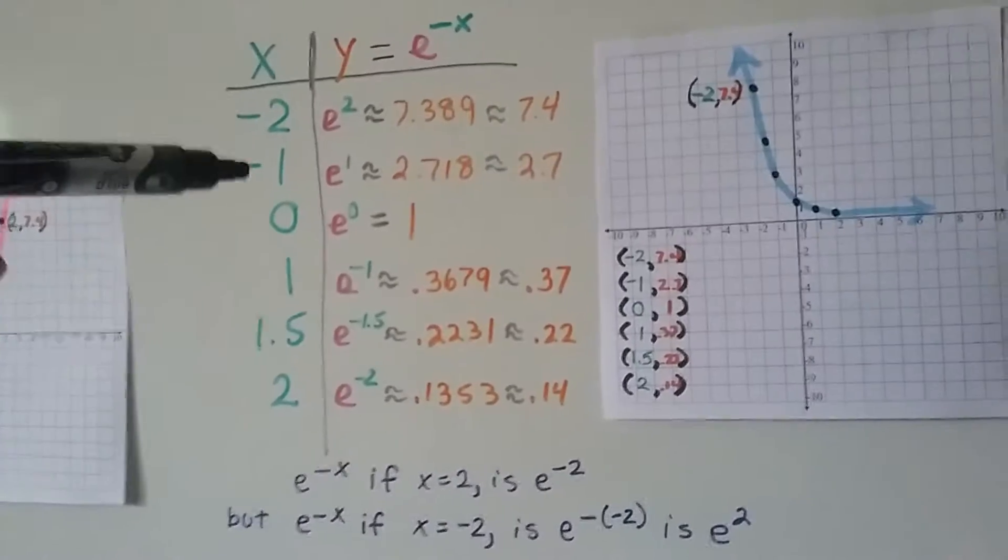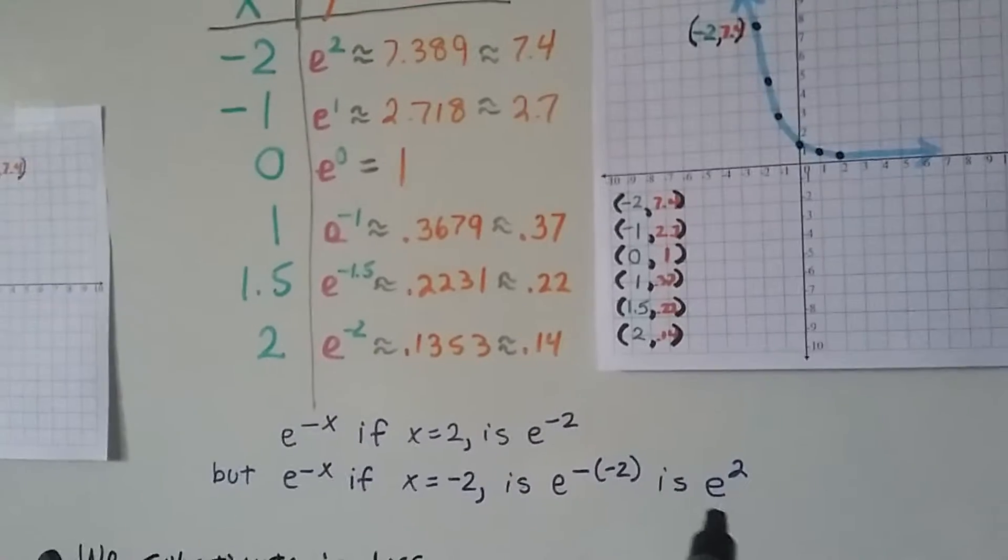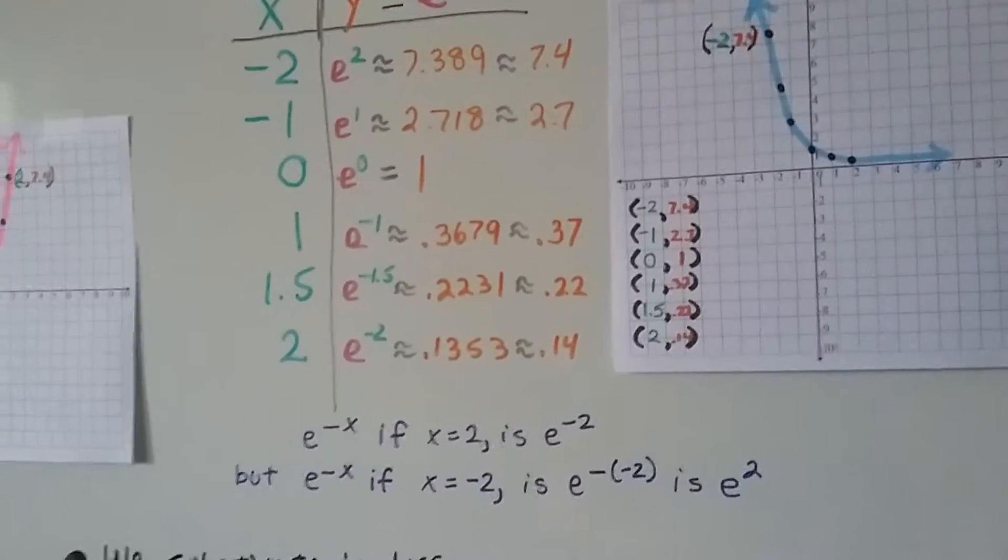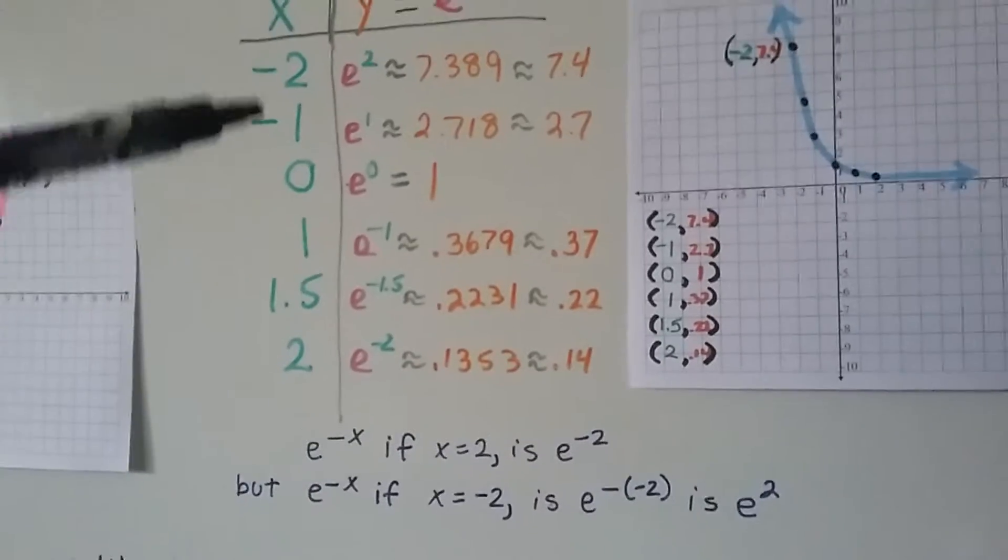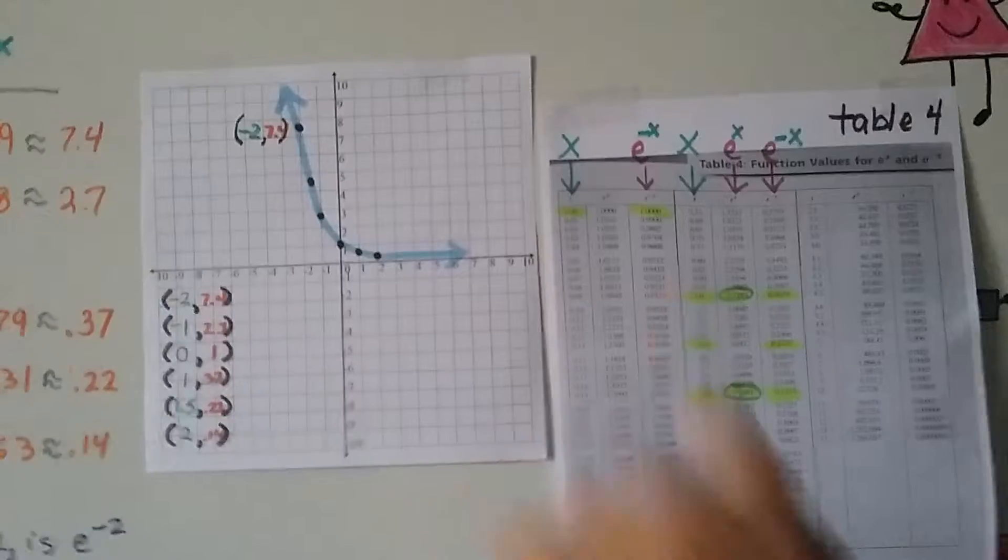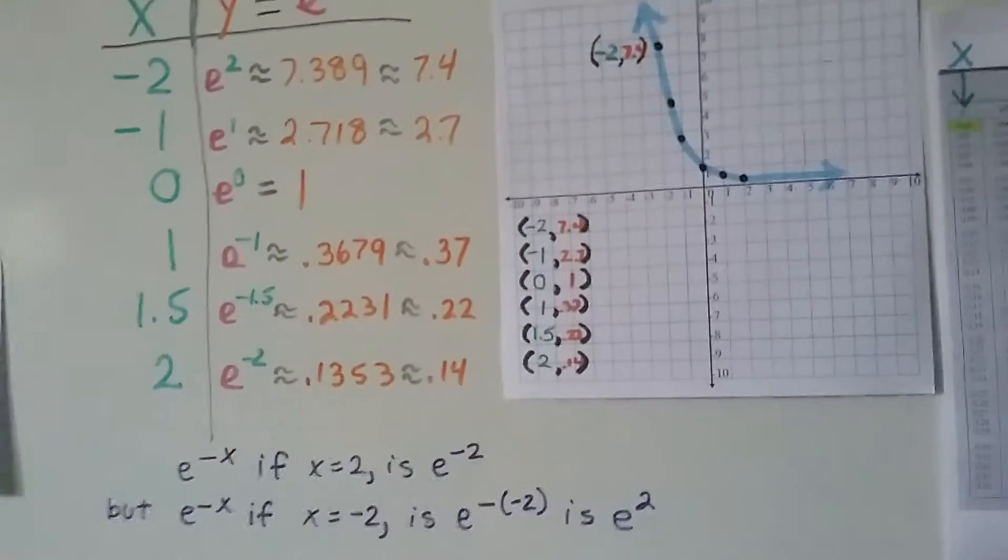Because it's already got that negative sign, when we add this negative sign to it, it's going to look like this. That really means we have e squared. It's a positive, or e to the first power. We look up each one of these on this table, and we get our ordered pairs.